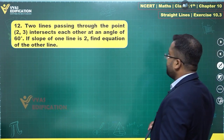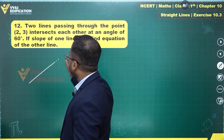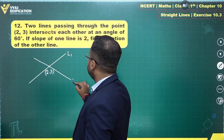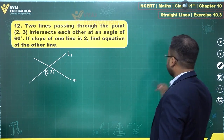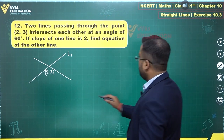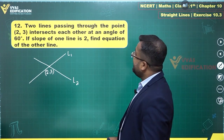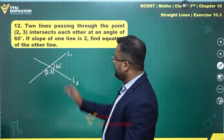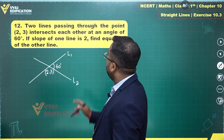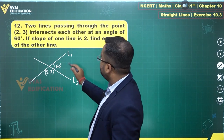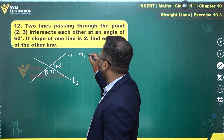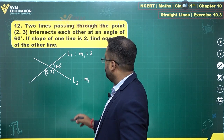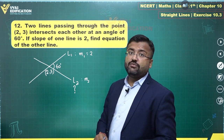We have two lines passing through the point (2, 3) — this is a common point. Let's call them L1 and L2. The slope of L1 is m1 = 2. The slope m2 of L2 is not known, and the equation of L2 is also not known — that's what we need to find.